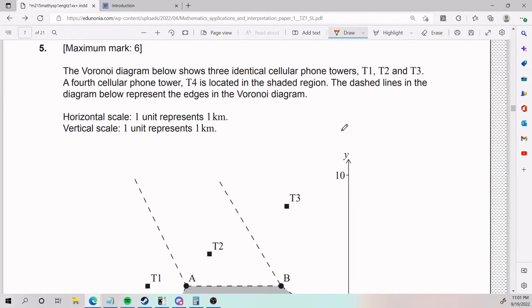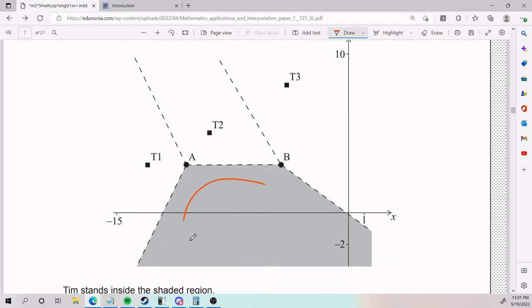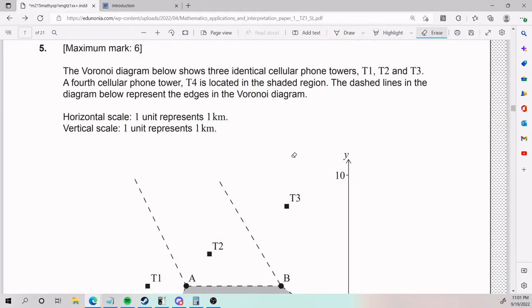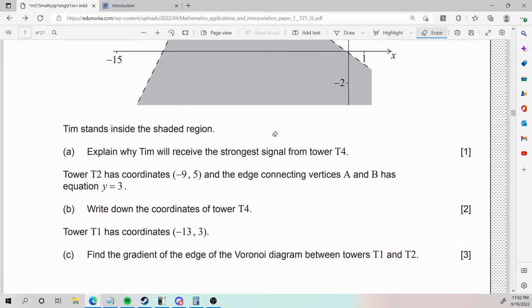Number five, we have the Voronoi Diagram. Below shows three identical cellular phone towers T1, T2, T3. A fourth cellular phone tower, T4, is located in the shaded region, so somewhere here there is a T4 going around. The dashed lines in the diagram below represent the edges in the Voronoi Diagram, and they tell us a little bit about the scales.